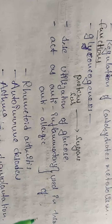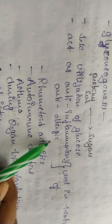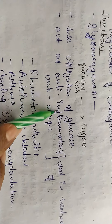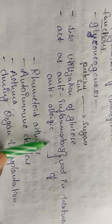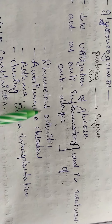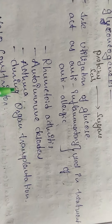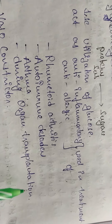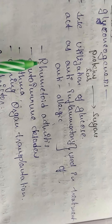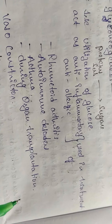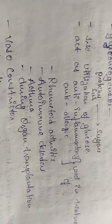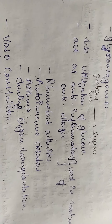Glucocorticoids have excess anti-inflammatory and anti-allergic properties. They are used in the treatment of rheumatoid arthritis, atherosclerosis, lymphoma, and autoimmune disorders, as well as during organ transplantation. They also have vasoconstrictor activity.